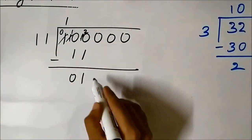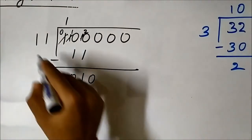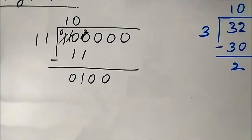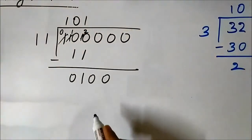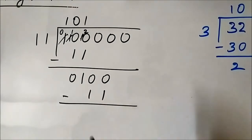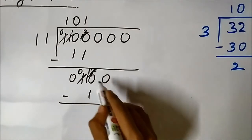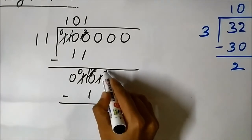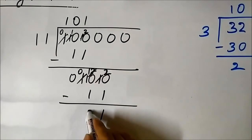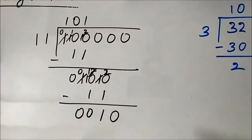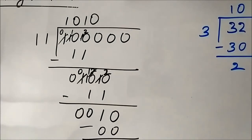Bring down the next bit — 1 0 is less than 1 1, so we place a 0 in the quotient and bring down another bit, giving 1 0 0. Since 1 0 0 is less than 1 1? No — we place another 1, subtract 1 1, and the result continues. We keep bringing down bits, and when 1 0 is less than 1 1 we place 0, until we have processed all bits: the quotient so far is 1 0 1 0.